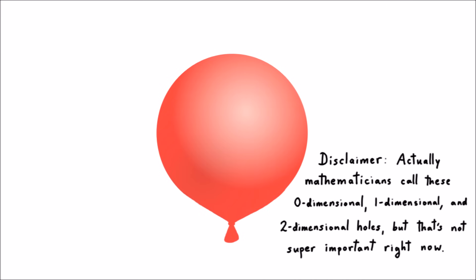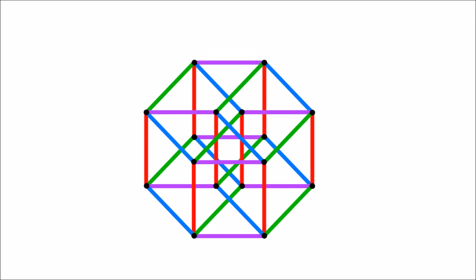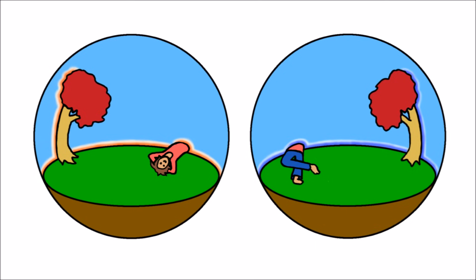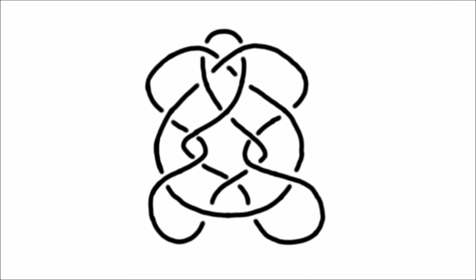By choosing to ignore certain details about shapes, we can focus our attention on their more fundamental properties. This is especially important when we study crazy shapes. Shapes like high-dimensional objects, or curved models of our own universe, or complicated knots, or say knotted surfaces in a curved four-dimensional space.